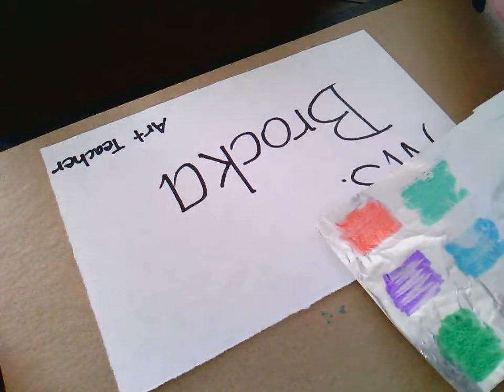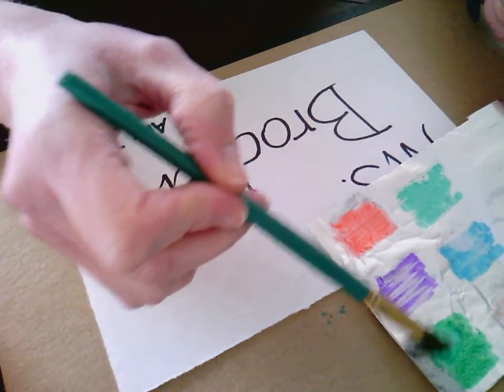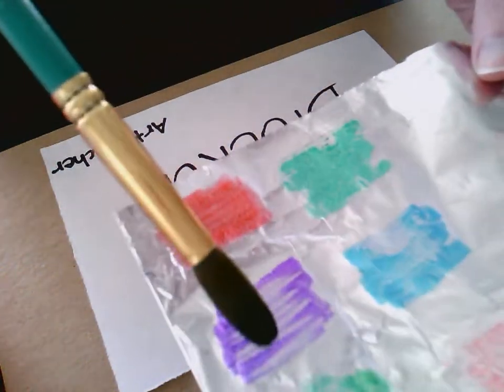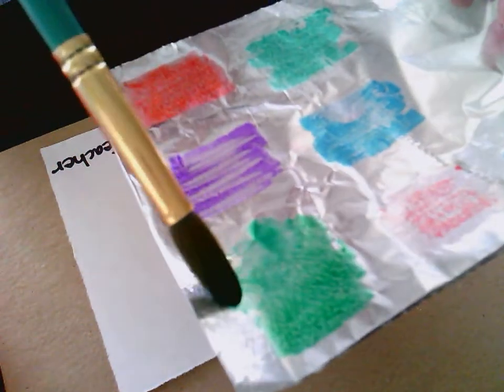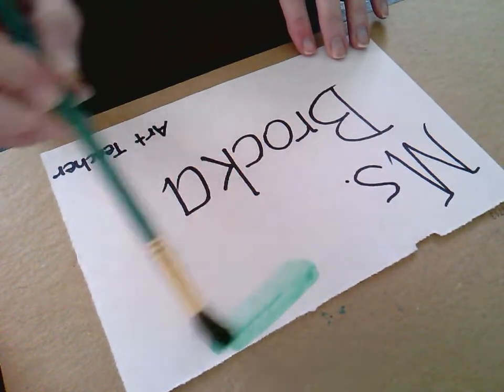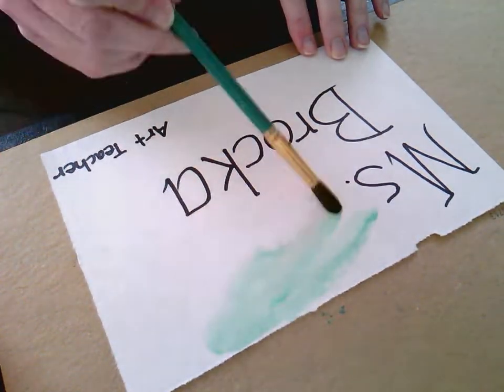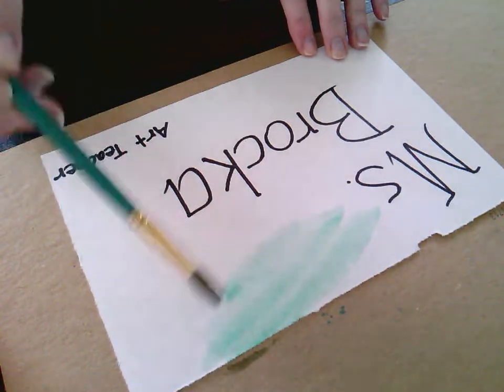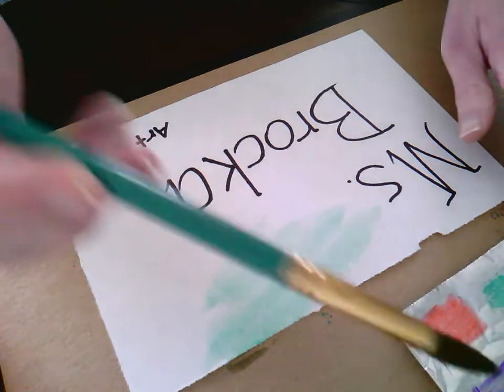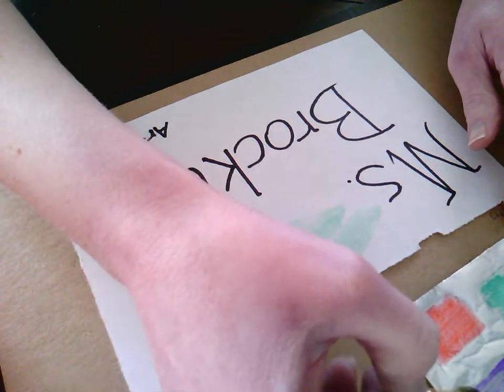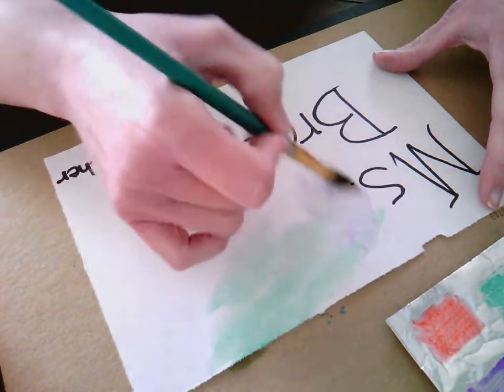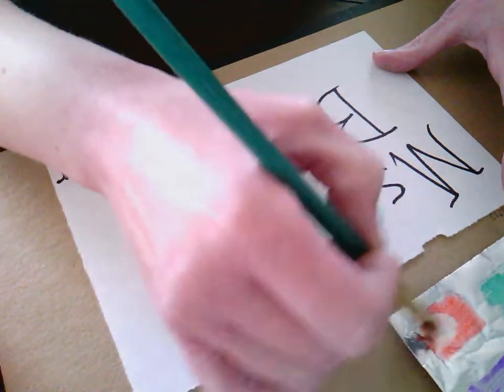So now what I'm going to do is I'm going to take and I'm going to get my paintbrush wet and I'm going to swirl it around. And then I can paint. Sorry, that purple is really light there, but I can paint.